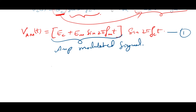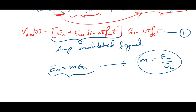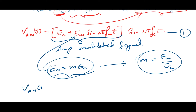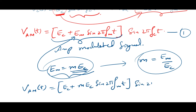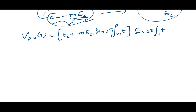From our previous discussions, we know that EM = MEC, which comes from the modulation index equation M = EM / EC. Just rearranging that gives EM = MEC. We will substitute this in place of EM in Equation 1. So VAM(t) becomes equal to (EC + MEC · sin(2π fm t)) · sin(2π fc t).